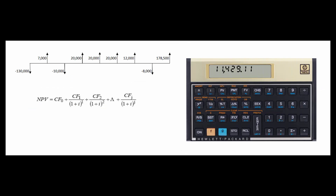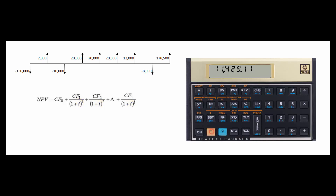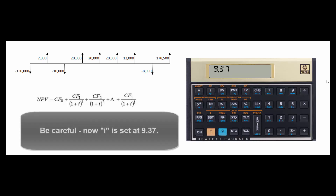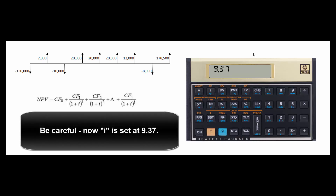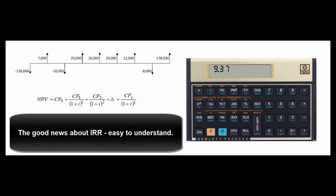We could also find the internal rate of return — that's the discount rate at which the present value of the future cash flows exactly equals the initial cash outlay, or essentially what the project earns. Hit F-IRR and it tells us 9.37%. Since that's more than 8%, we do it. IRR is easy to understand: even a non-finance person gets that if your money costs 8% and you invest it to earn 9.37%, that project's a go.